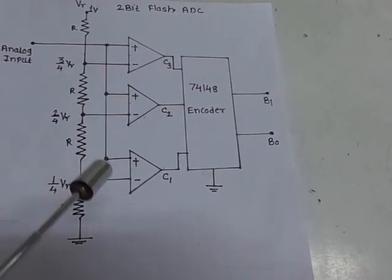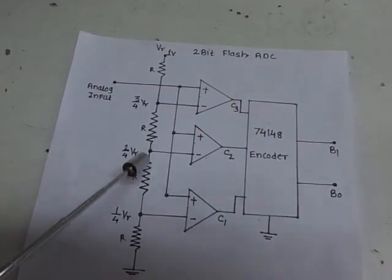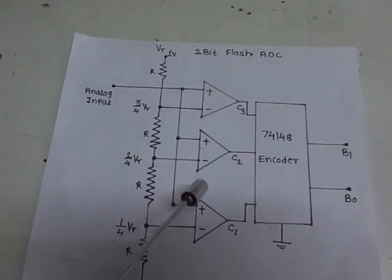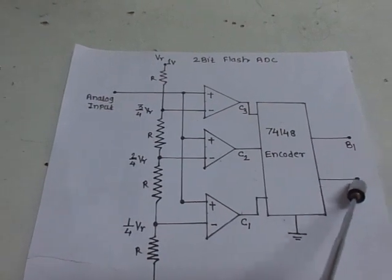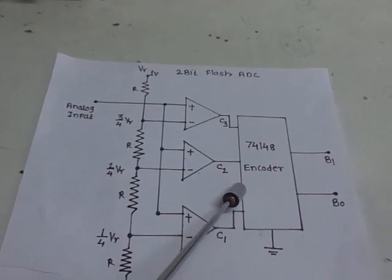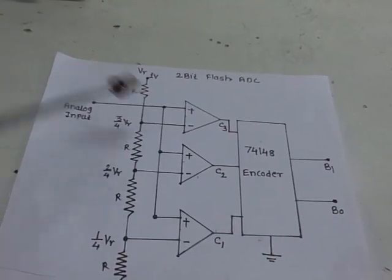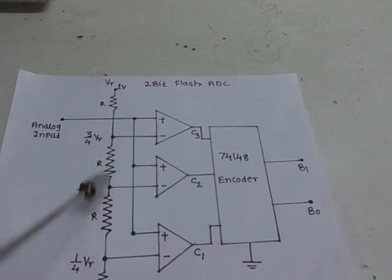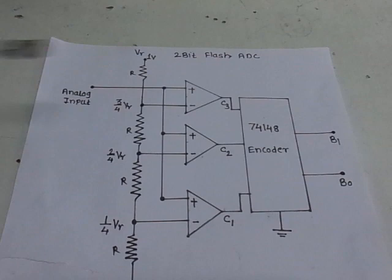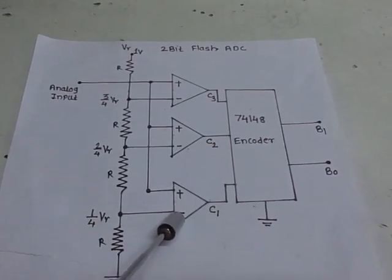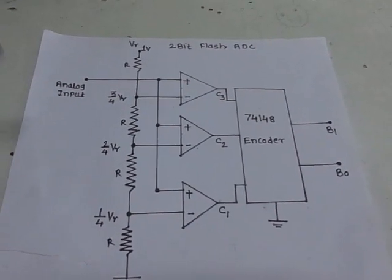The advantage of using the flash type of ADC is that it is the fastest type. The number of comparators required in a flash type ADC is 2 raised to n minus 1. Here we are selecting a 2-bit output, so 2 raised to 2 is 4, and 4 minus 1 gives 3 comparators: C1, C2, and C3. For a 3-bit output, 2 raised to 3 is 8, so 8 minus 1 gives 7 comparators. The circuit complexity is less and we can convert the analog input signal into the corresponding digital output signal.